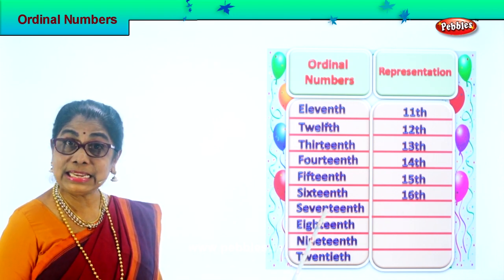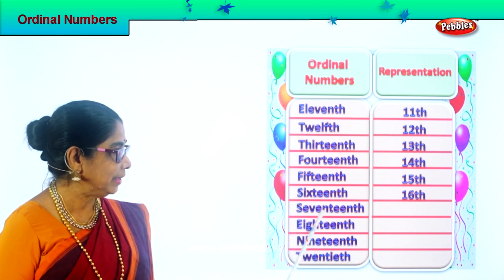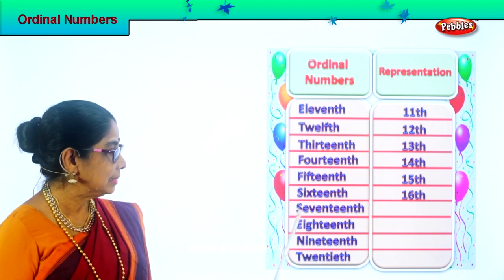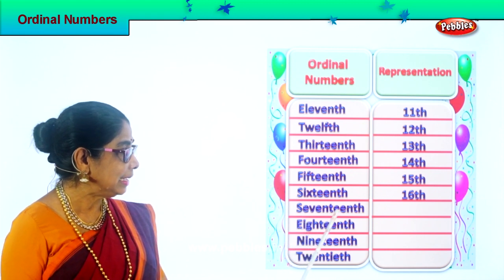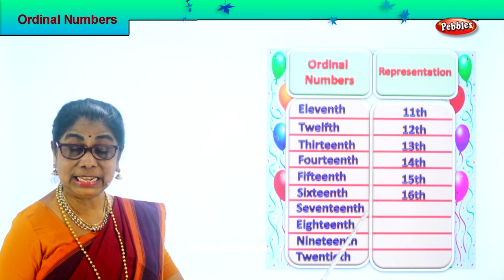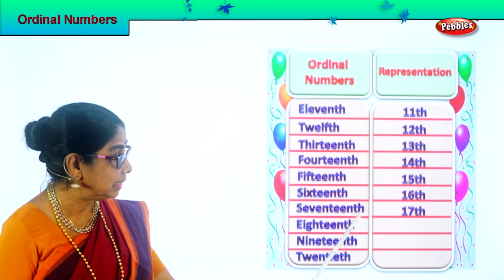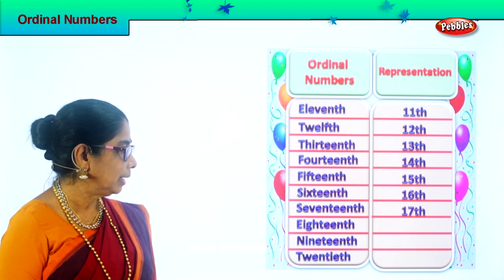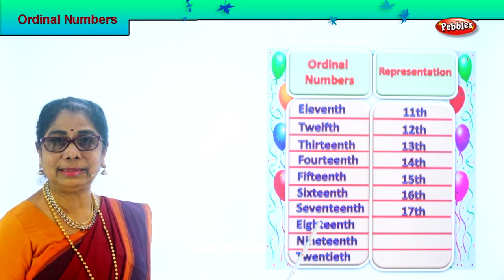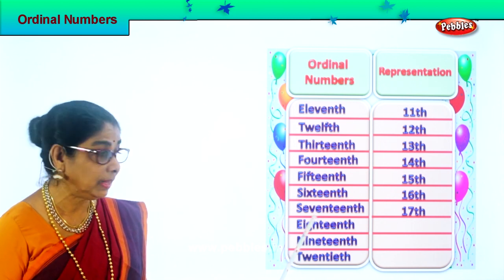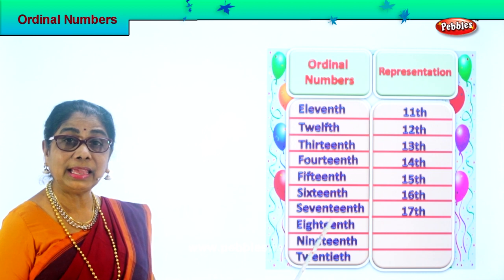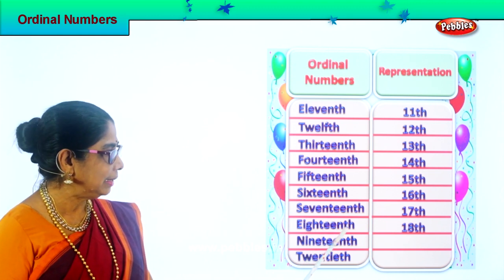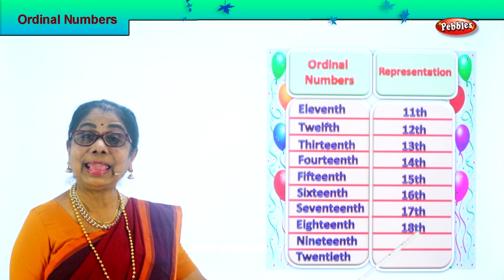Next — 17th. Spell seventeenth: S-E-V-E-N-T-E-E-N-T-H. 17th. How do you represent 17th? Put number 17 and write TH at the side: 17th. Now we look at 18th. Spell eighteenth: E-I-G-H-T-E-E-N-T-H. 18th. How do you represent 18th? Put 18 and TH at the side: 18th.